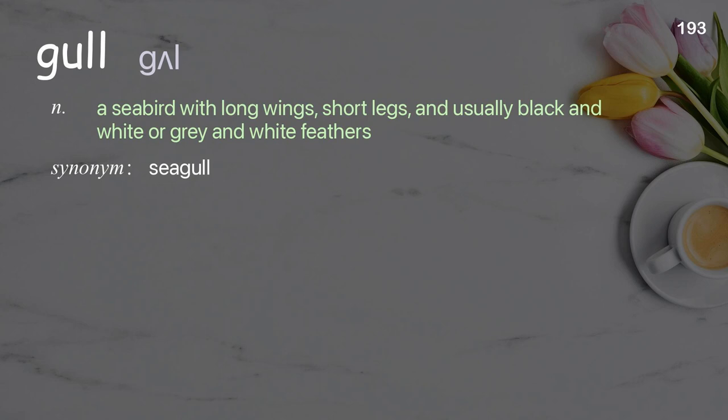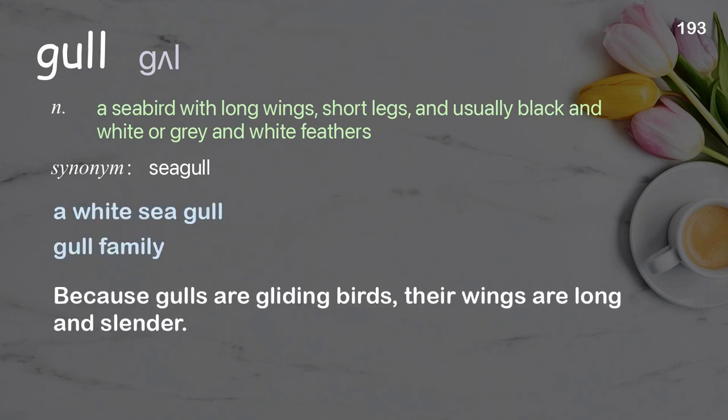Gull: a seabird with long wings, short legs, and usually black and white or gray and white feathers. Examples: a white seagull, gull family. Because gulls are gliding birds, their wings are long and slender.